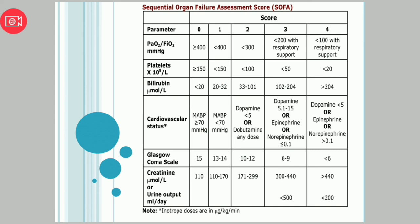For creatinine or urine output: if 24-hour urine output is less than 500 ml/day, score is 3. If less than 200 ml/day, score is 4. Note that inotrope doses are in micrograms per kg per minute — for example, norepinephrine less than 0.1 mcg/kg/min. We must know the patient's actual body weight to calculate all values accurately.